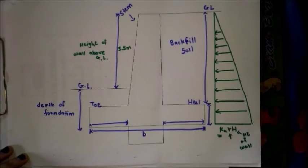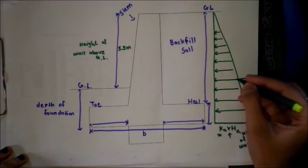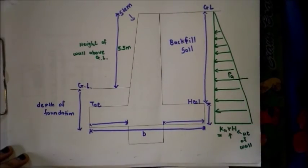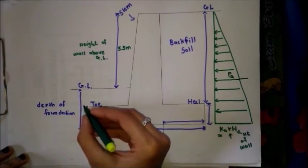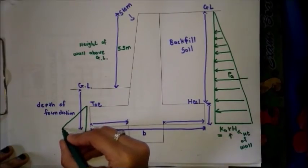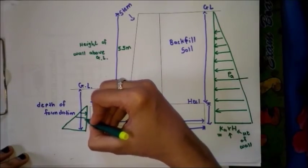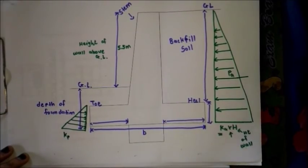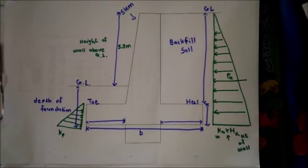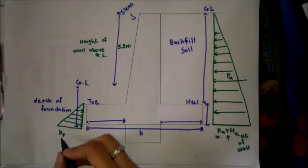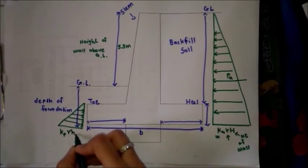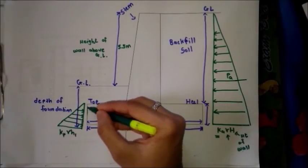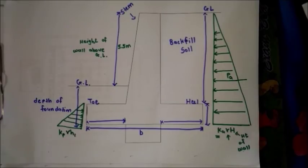We know that if there is any external force on a body, there will be a resisting force of the same magnitude but in the opposite direction. So if we have active earth pressure Pa on one side, there will also be passive earth pressure on the opposite side of the wall, also acting in a triangular form. Its value is Kp × gamma × H1, where H1 is the depth on the passive side and gamma is the density of the soil.